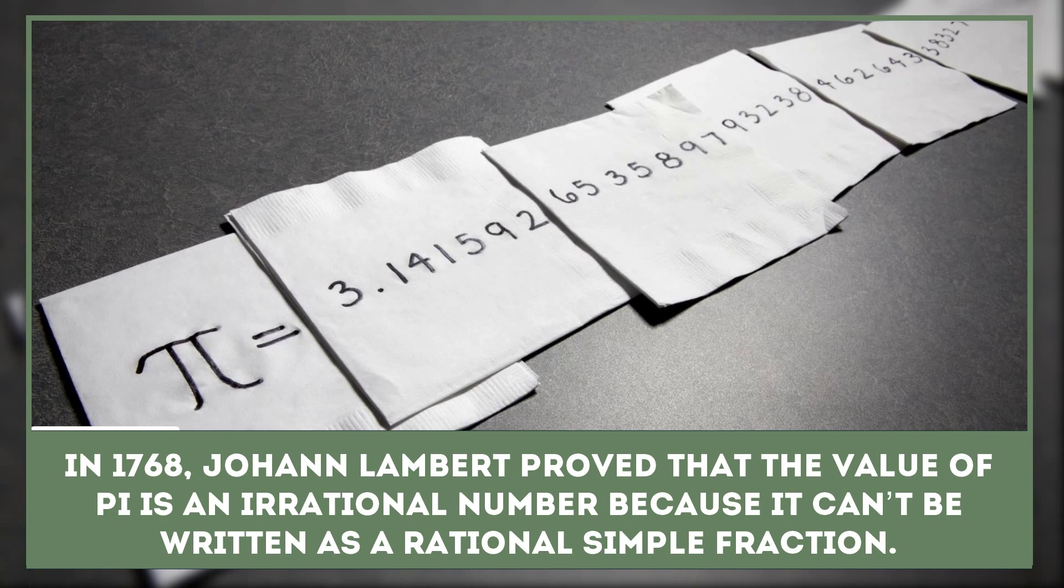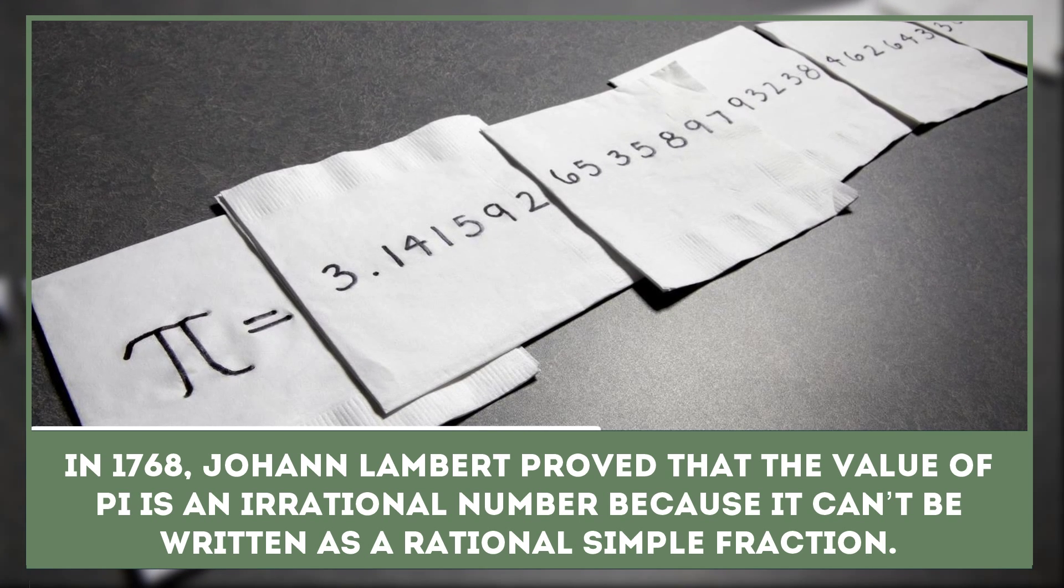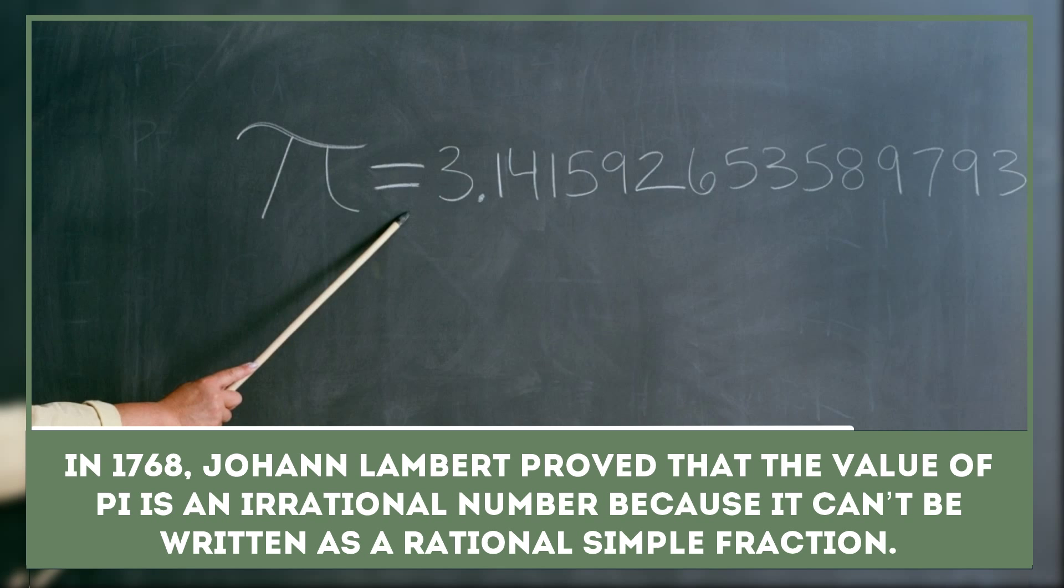In 1768, Johann Lambert proved that the value of pi is an irrational number because it can't be written as a rational simple fraction.